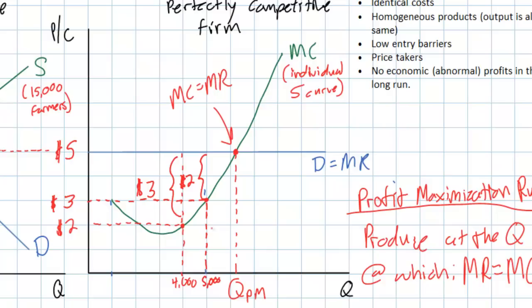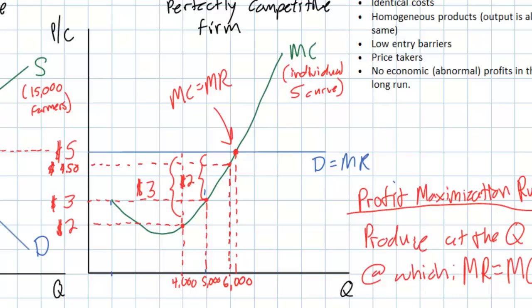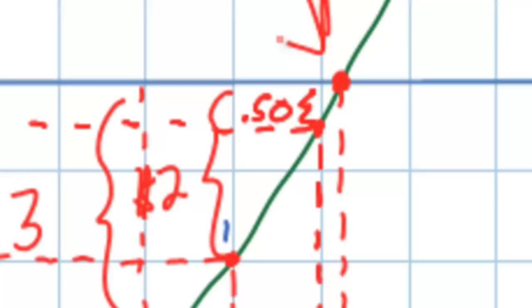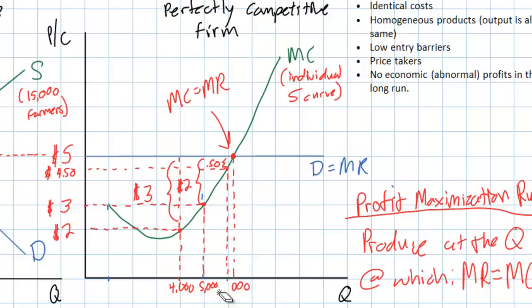Should the farmer increase output further to 6,000 liters? At 6,000 liters, marginal cost rises yet again due to the law of diminishing marginal returns — marginal cost is now around $4.50 for the last liter of milk produced. He's still earning a profit of $0.50 on the 6,000th liter. Profits continue to increase for milk production until you get to QPM, the point where marginal cost equals marginal revenue. For each additional liter of milk up to that point, this dairy farmer's profits increase.